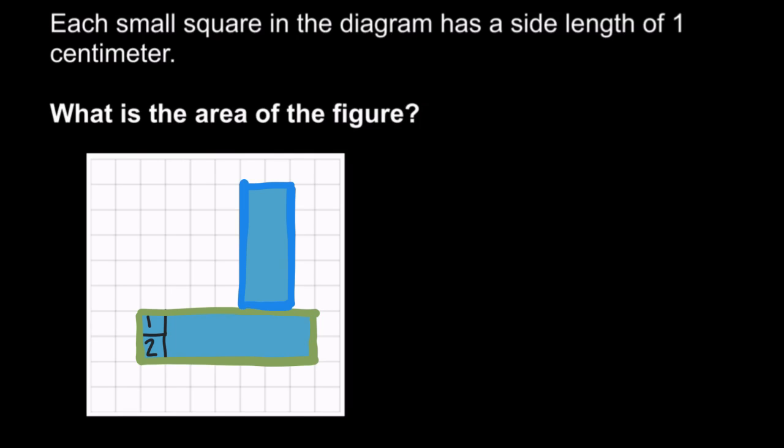Down here on the bottom we have two rows of unit squares, and each of those has one, two, three, four, five, six, seven. So there's two rows of seven unit squares, or seven square centimeters. So the bottom rectangle is made up of 14 square centimeters. It covers 14 square centimeters.